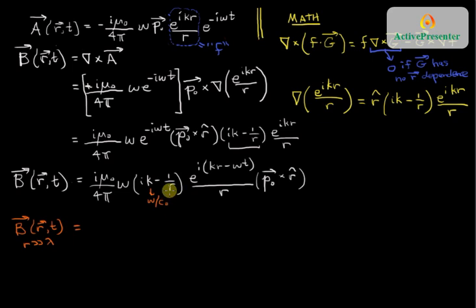one over r, that becomes approximately zero compared to k. If you write out the math of this, when r is much, much,